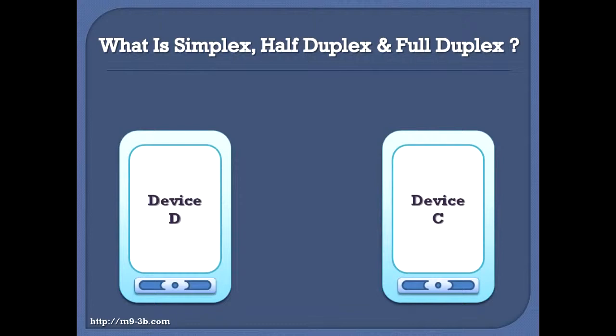Now let's say that we have other two devices, Device C and Device D. Both devices can transmit and receive, but if Device C is transmitting then Device D must be receiving, and the opposite is right.